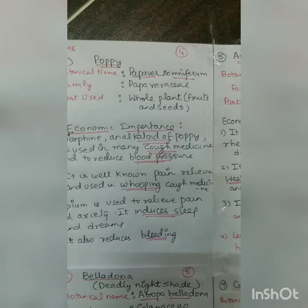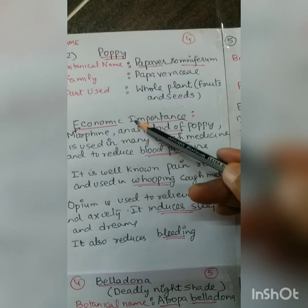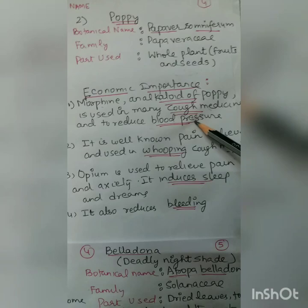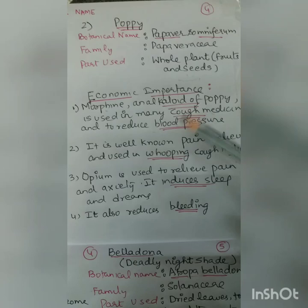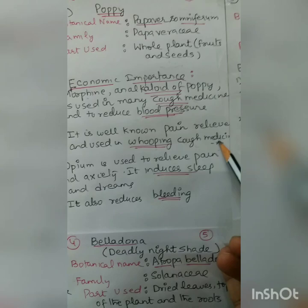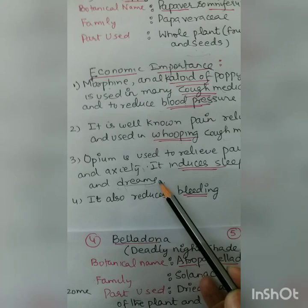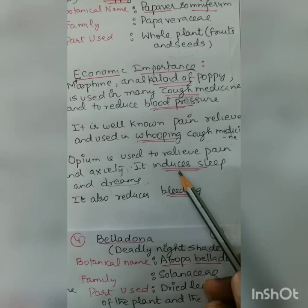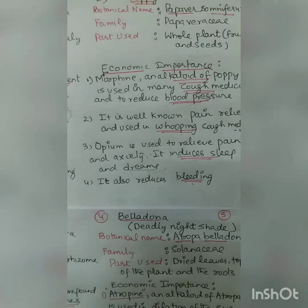Next is Poppy. Botanical name is Papaver somniferum, family Papaveraceae. Parts used are the whole plant, fruits, and seeds. The main alkaloid is morphine, used in cough medicines and to reduce blood pressure. It is a well-known pain reliever used in whooping cough medicines. Opium from poppy is used to relieve pain and anxiety, and induces sleep. However, people misuse it for hallucination. It also reduces bleeding.